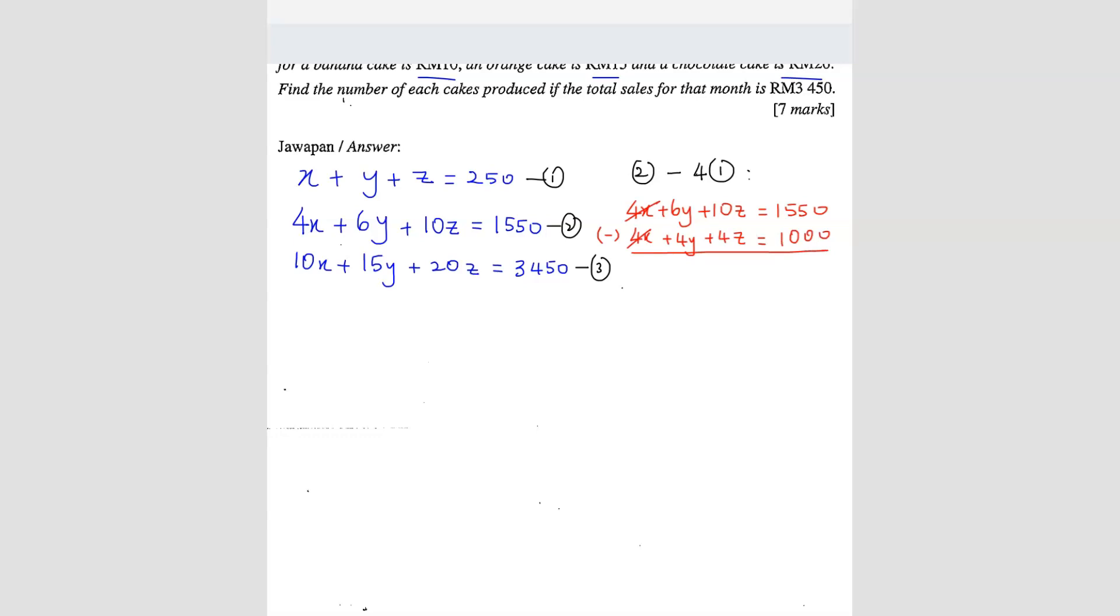Here you can eliminate the 4x. So you get 2y plus 6z equals 550. You can divide the whole thing by 2, so you get y plus 3z equals 275. This is equation 4.